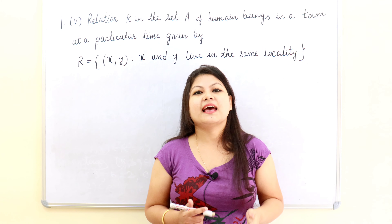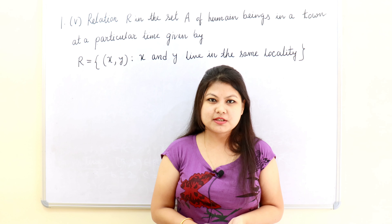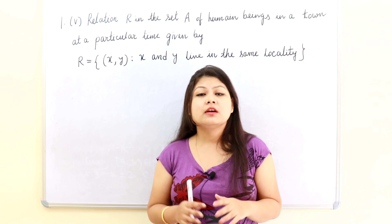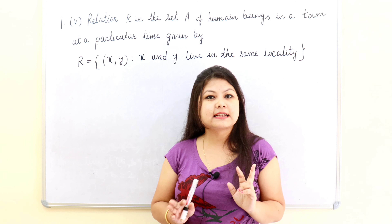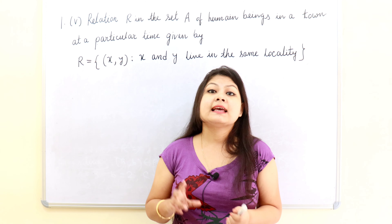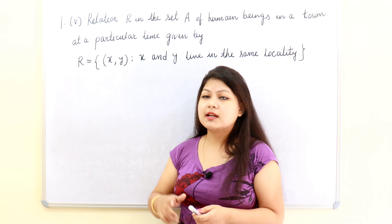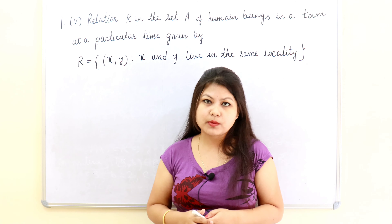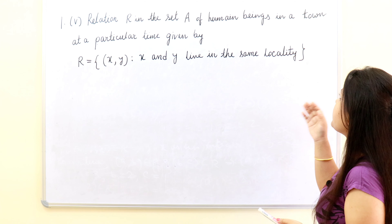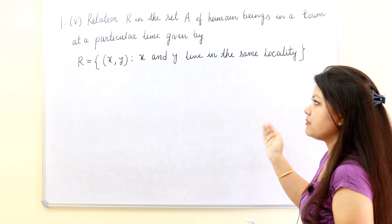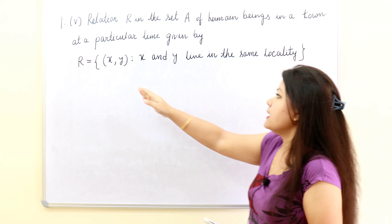Hello everyone, this is Rashmi and in this video we are going to discuss the solution of Chapter 1, book NCERT Class 12 Mathematics, Exercise 1.1, Question 1. The question is: given relation R in the set A of human beings in a town at a particular time, given by R = {(X,Y): X and Y live in the same locality}. We have to check whether the relation is reflexive, symmetric, or transitive.